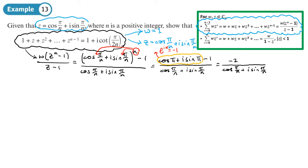We probably can't simplify much further, but if I write the denominator in exponential form, we'll have more of a chance. The denominator in exponential form is e^(iπ/n) − 1. So we've got −2 over e^(iπ/n) − 1. I noticed I missed the −1 terms earlier, so I've now put them back in correctly throughout.